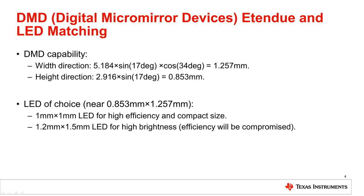Before we dive into the design, let's look at the DMD etendue capability and see what size of LED would be a good match. The DMD etendue is determined by the active array size as well as the cone angle collectible to the projection lens. We assume an F1.7 projection lens, which corresponds to a ±17 degree cone angle.